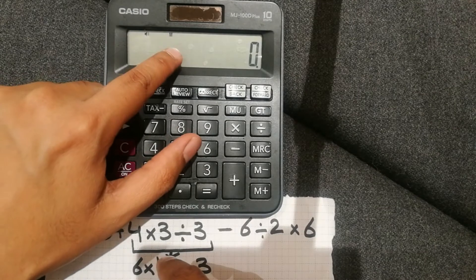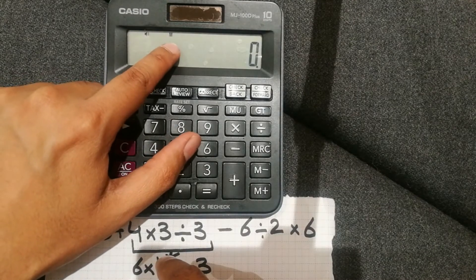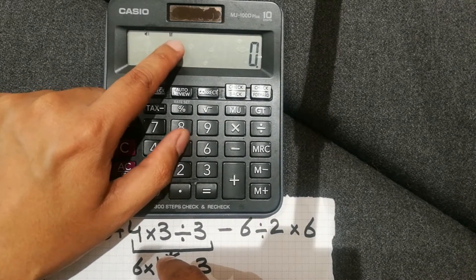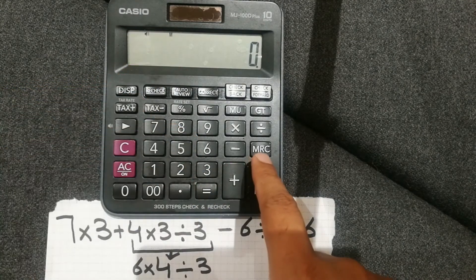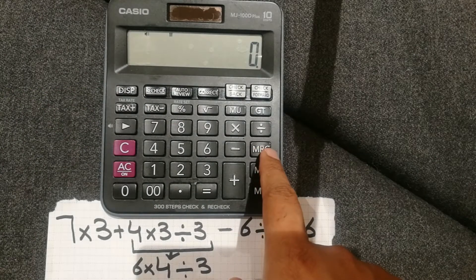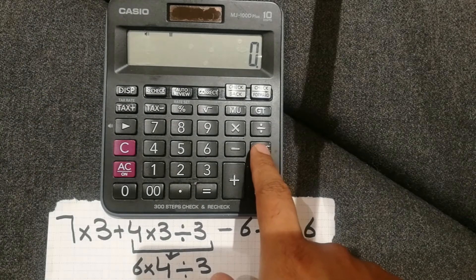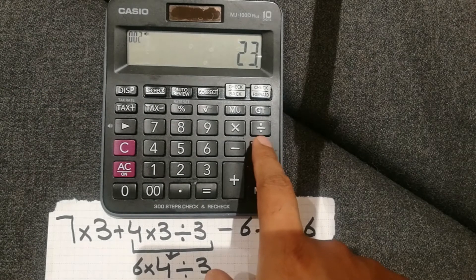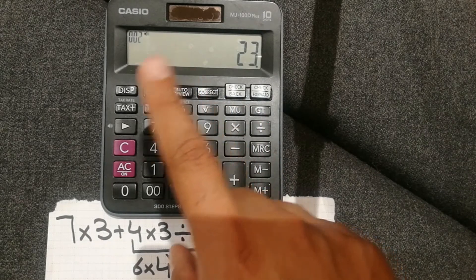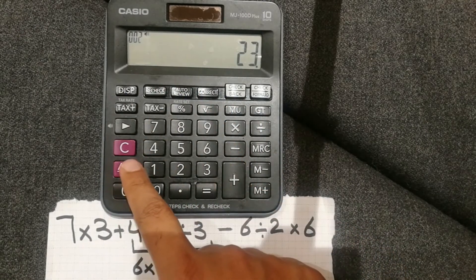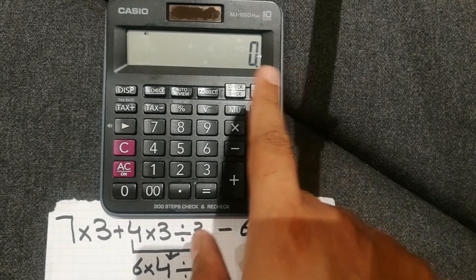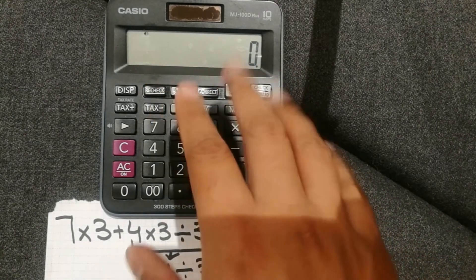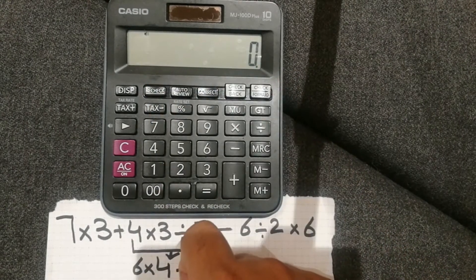First of all, you can see here there is an M sign on the calculator screen. You have to remove it. To remove it, you have to press the MRC button two times. I press MRC two times and the M sign has been removed. So the first step is done.